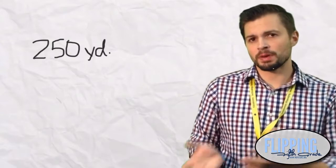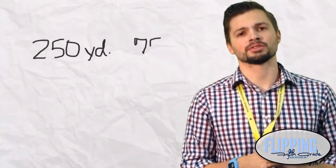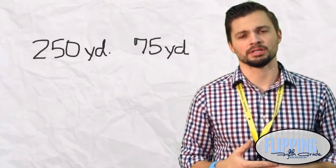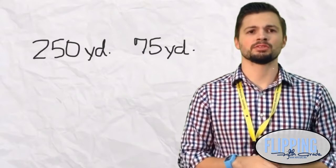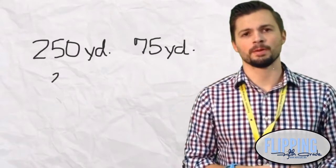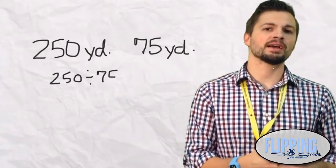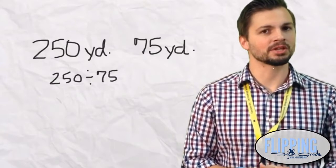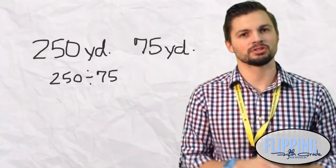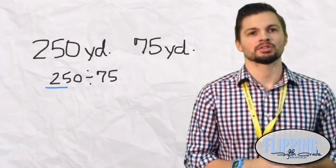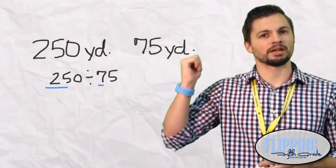Let's say you need 250 yards of string to fly a kite. Each pack of string comes in 75 yards and you want to figure out how many packs you need. Now to do this we need to divide 250 by 75. We may not know our 75 times tables, but that is okay because we just learned about compatible numbers. So now we are going to set up 250 divided by 75.